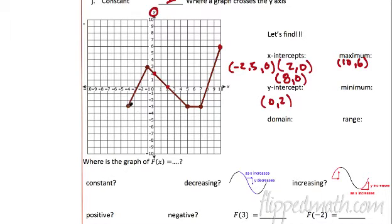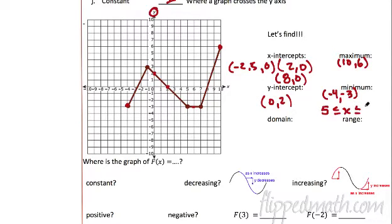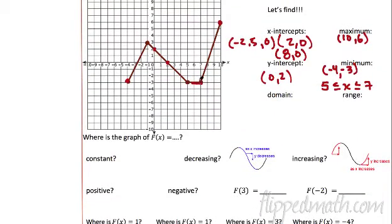Now the minimum — we have minimums here and a minimum right here. The minimum is the lowest part of the graph. Here is as low as it gets: that's negative four, negative three. And then we have this whole range right here where the minimum is. When we have to write that range, we're going to write the domain from five to seven using a compound inequality: x has to be greater than or equal to five but less than or equal to seven. That means all the way in here we have a minimum. We have so many points where it's a minimum right there. The y value we can write next to it: y equals negative three.